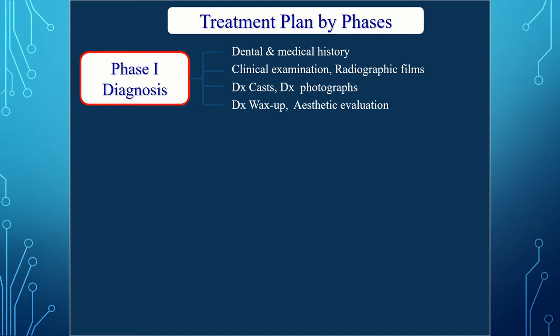Diagnostic casts are made from primary impressions. Diagnostic photographs should also be taken as records from the beginning to the end of the case, which helps track treatment and the variety of cases worked on. Once the cast is obtained, mounting is done on an articulator, and a diagnostic wax-up is performed. For missing anterior teeth, aesthetics can be evaluated.